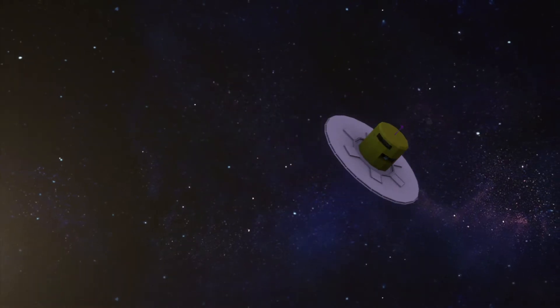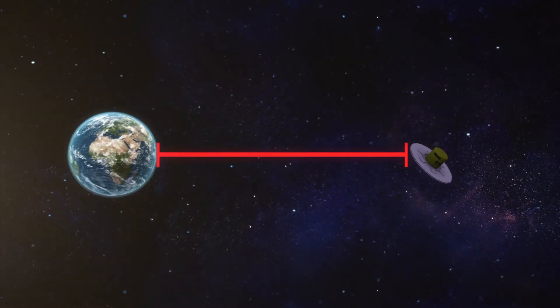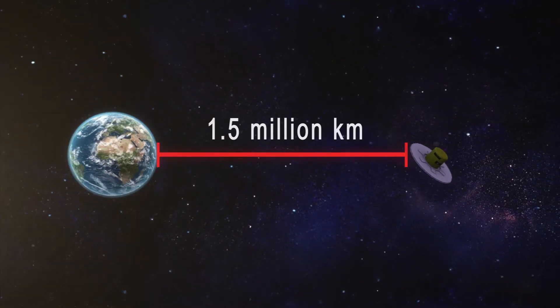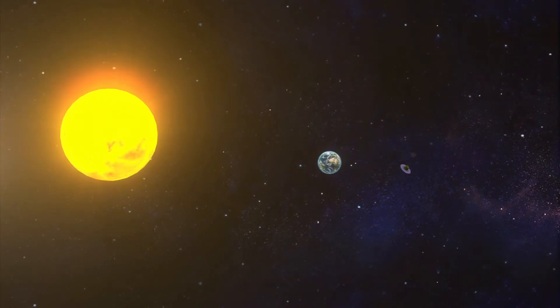Gaia will map the stars from an orbit around the sun at a distance of 1.5 million kilometers beyond Earth's orbit, a location known as the L2-Lagrangian point.